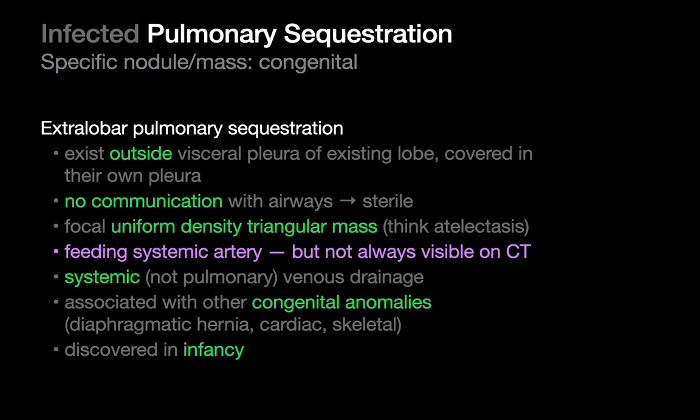On an enhanced study you'll see a uniform density, kind of triangular mass or opacity that you might even mistake for atelectasis or scar. Like intralobar sequestrations, extralobar ones are going to be fed by a systemic artery — if it's big enough to be visible, especially on an enhanced CT, you'll be able to call it specifically. But if the vessel is too small to see, it may end up being worked up as a nonspecific mass. The venous drainage of extralobar sequestrations is systemic rather than pulmonary — that's one distinguishing feature from intralobar sequestrations.